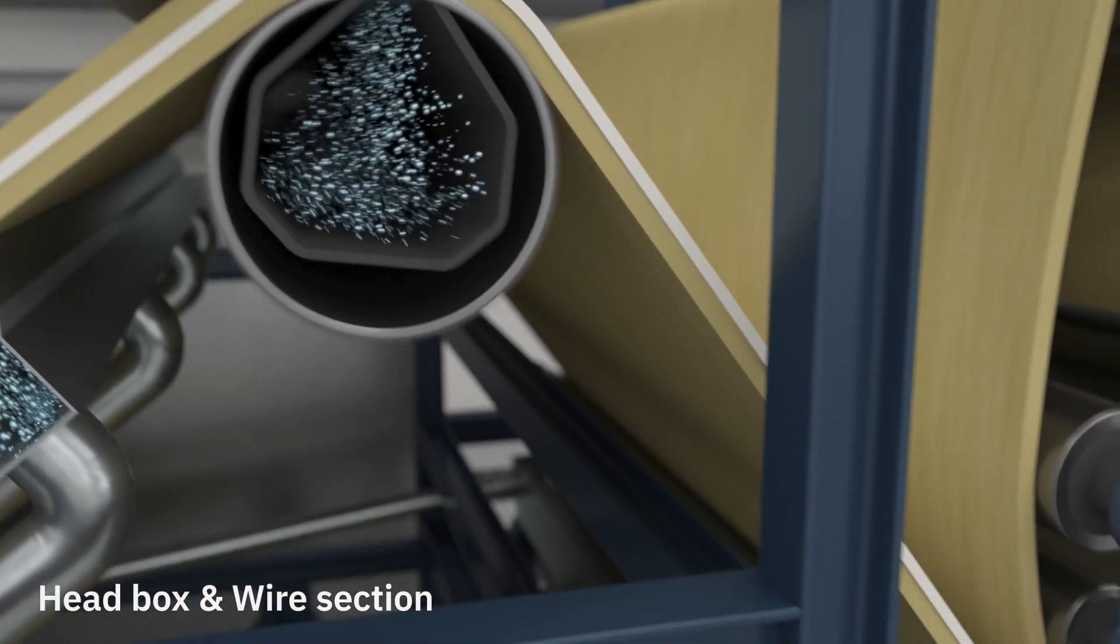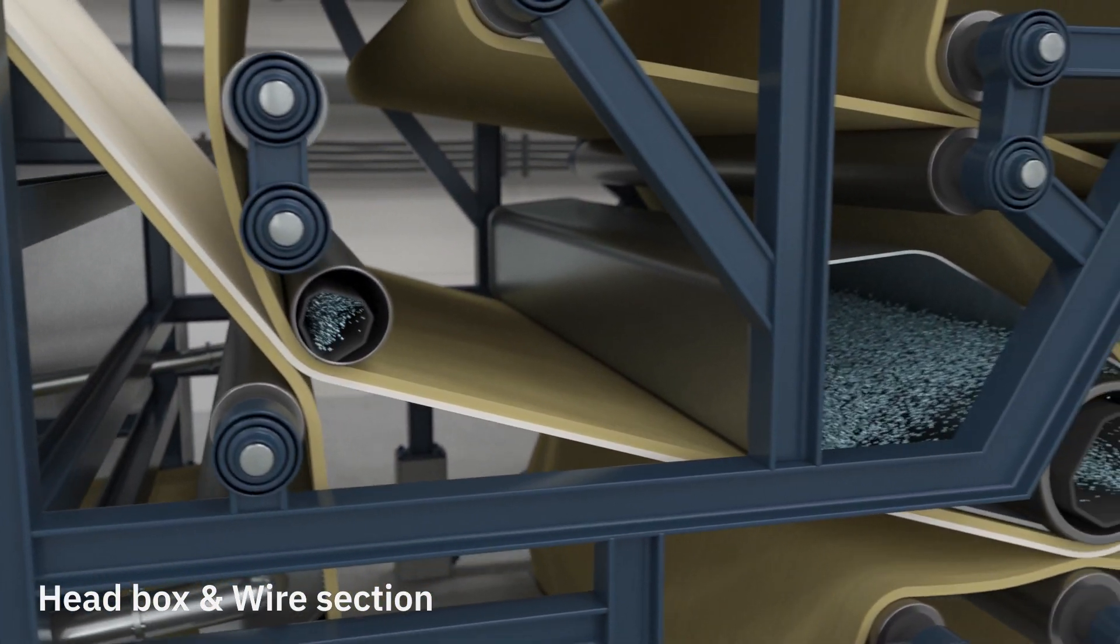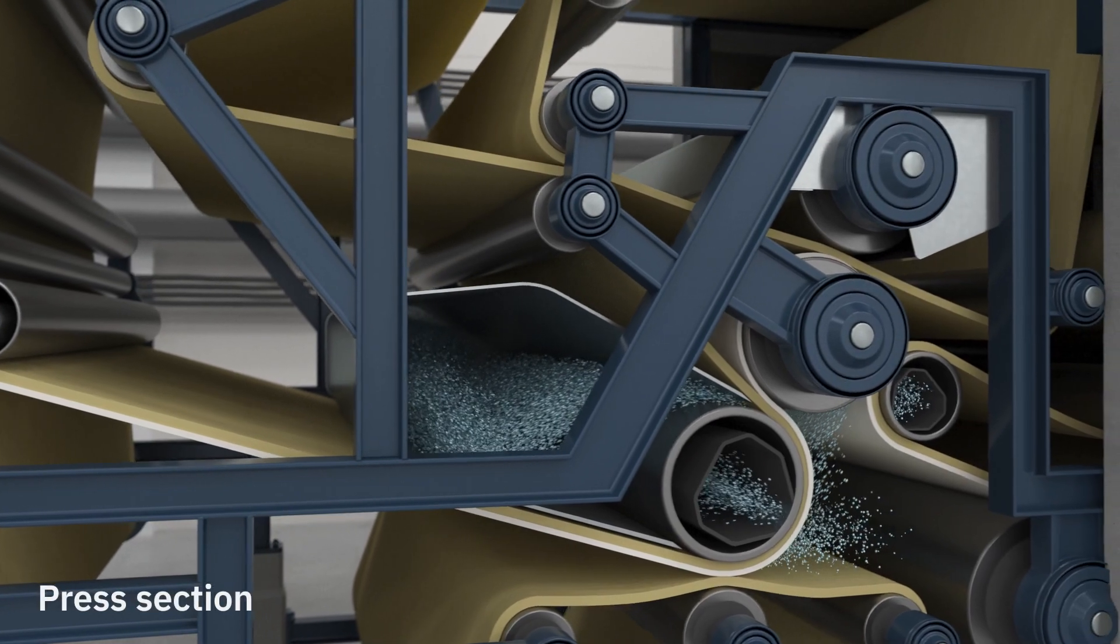The two fabrics are separated over the couch roll and cannot be moved anymore. Due to the high speed of the machine, this only takes fractions of a second.